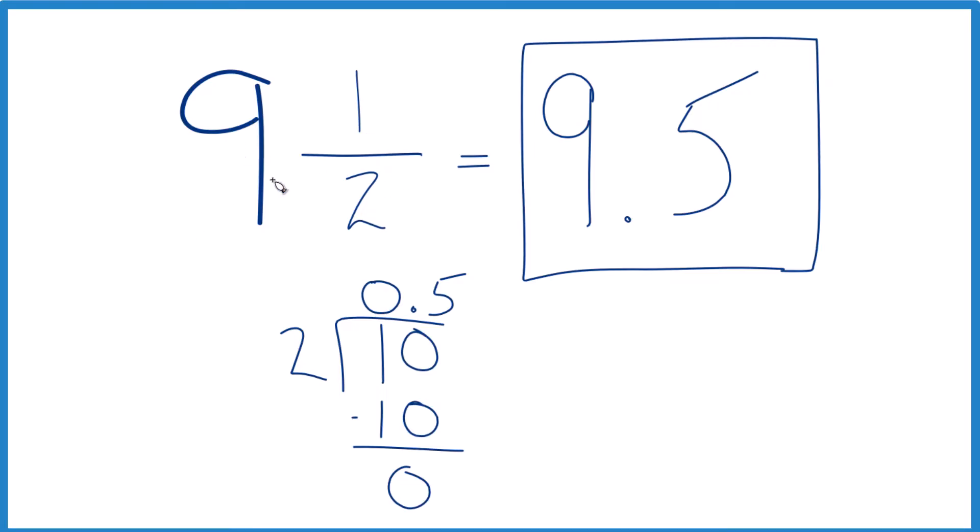So we have 9 plus 0.5, that gives us 9.5. The fraction 9 1⁄2 equals the decimal 9.5. This is Dr. B. Thanks for watching.